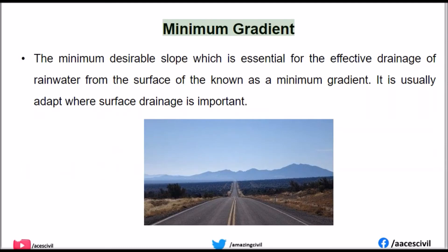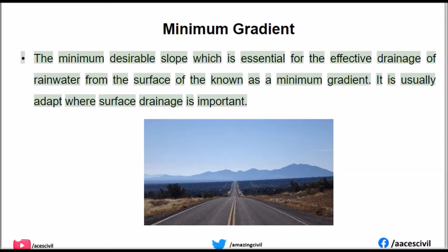Minimum gradient: The minimum desirable slope which is essential for the effective drainage of rainwater from the surface of the road is known as the minimum gradient. It is usually adopted where surface drainage is important.